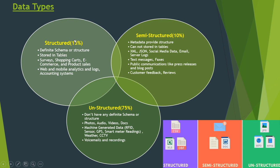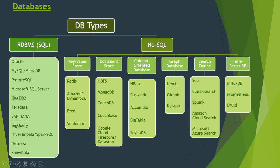Earlier we were only able to process structured data. We used RDBMS — relational database management systems — to manage relational databases, and we used SQL — structured query language — queries to process data from those databases. Systems included Oracle, MySQL, PostgreSQL, Microsoft SQL Server, and Teradata.